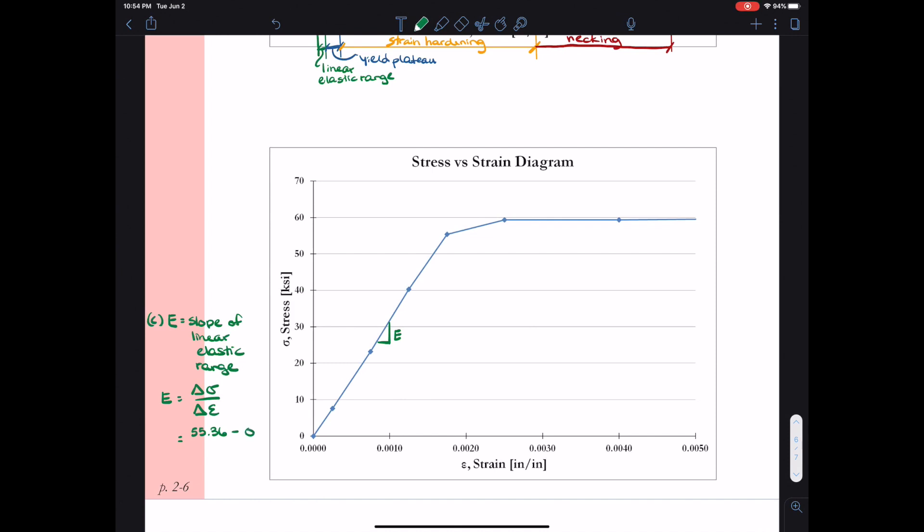So calculating slope is just rise over run. So I have my change in stress over my change in strain. So data point five is 55.36 KSI minus zero divided by the strain, 0.00175 minus zero. That gives me an approximate value for E of 31,600 kips per square inch. So that is approximately the slope of this line.